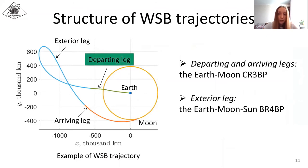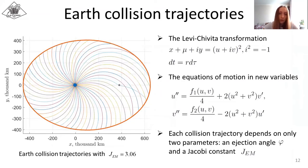What concerns the departing leg: In order to avoid the dependency on specific near-Earth orbit, we propose to use the Earth collision trajectories. To eliminate the singularity of the CR3BP equations of motion at the center of the Earth, we apply the Levi-Civita transformation and transition to a new independent variable, fictitious time tau. Each collision trajectory depends on only two parameters: an injection angle and a Jacobi constant. Such WSB trajectories then may be adapted to realistic trajectories that start on a specific near-Earth orbit.